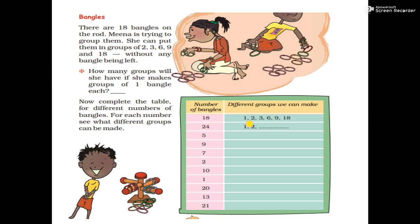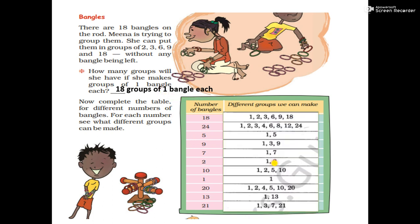Likewise, for 21 bangles: if we make 1 group, there will be 21 bangles in that group. For 24 bangles: we can make 1 group with 24 bangles, or 2 groups of 12 each (since 12×2=24). We have to make all such groups for different numbers of bangles — finding how many groups of different sizes can be made from 18, 21, 24, and other numbers.